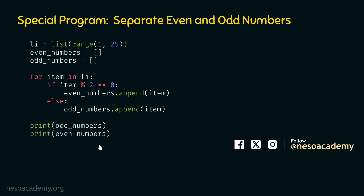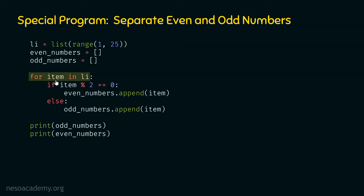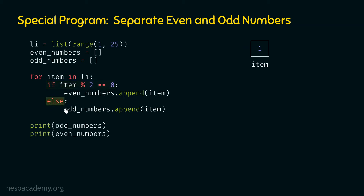Let's execute this code line by line. First we evaluate the for statement: for item in li. The list li contains all items from 1 to 24. The item variable will receive the first item of the list, which is 1. We check: is item mod 2 equal to 0? No — item mod 2 is not equal to 0 because 1 is not divisible by 2. Therefore, 1 is an odd number and the else block must be executed.